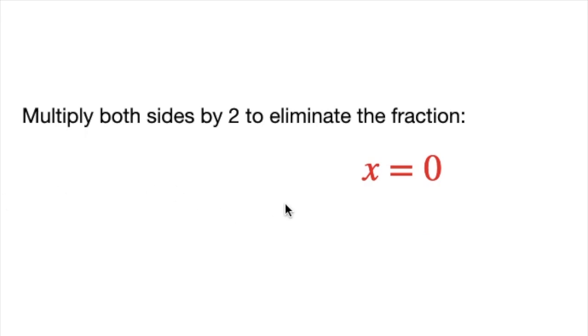Solve for x. At this point, we have x/2 = 0. To eliminate the fraction, multiply both sides by 2, giving us x = 0.